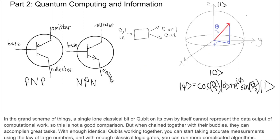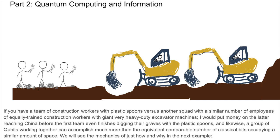In the grand scheme of things, a single lone classical bit or qubit on its own by itself cannot represent the data output of computational work, so this is not a good comparison. But when chained together with their buddies, they can accomplish great tasks. With enough identical qubits working together, you can start taking accurate measurements using the law of large numbers, and with enough classical logic gates, you can run more complicated algorithms. If you have a team of construction workers with plastic spoons versus another squad with a similar number of employees of equally trained construction workers with giant very heavy-duty excavator machines, I would put money on the latter reaching China before the first team even finishes digging their own graves with the plastic spoons. And likewise, a group of qubits working together can accomplish much more than the equivalent, comparable number of classical bits occupying a similar amount of space. We will see the mechanics of just how and why in the next example.